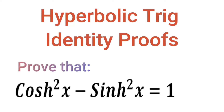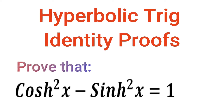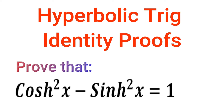In today's video, we want to prove that hyperbolic cos squared of x minus hyperbolic sin squared of x is equal to 1. If you are new to this channel, please hit that subscribe button, give this video a thumbs up and hit that notification bell to be notified whenever we post these videos.